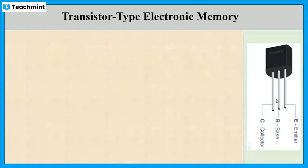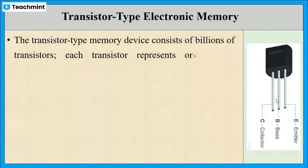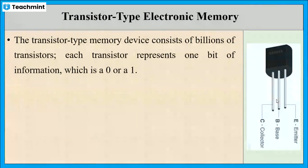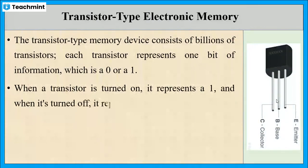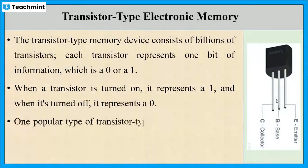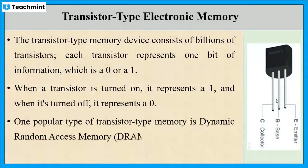The transistor type memory devices consist of billions of transistors in which each transistor represents one binary digit of information, that is 0 or 1. When the transistor is turned on, it represents 1, and when it is turned off, it represents 0. The example for this type of memory is DRAM or dynamic RAM.